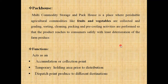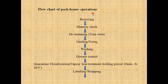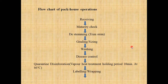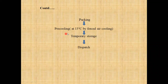Next we will see what are the different unit operations carried out in the Pack House. This is the flowchart of Pack House operations, starting from receiving up to dispatch. First receiving, then maturity checking, after that de-steaming or trimming, then grading or sizing, after that washing, then disease control, then quarantine dissipation by using vapor heat treatment — holding for 10 minutes at 46 degrees Celsius — then labeling or wrapping, then packing. After packing, you can pre-cool your commodity at 13 degrees Celsius by forced air cooling. Next is temporary storage and dispatch.